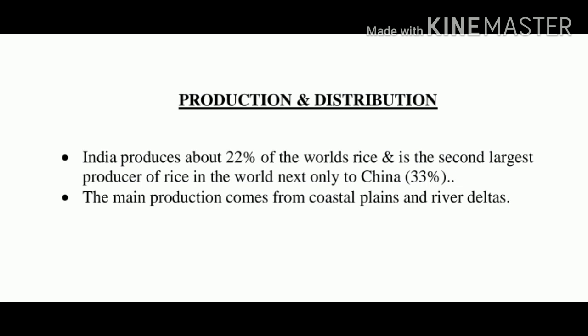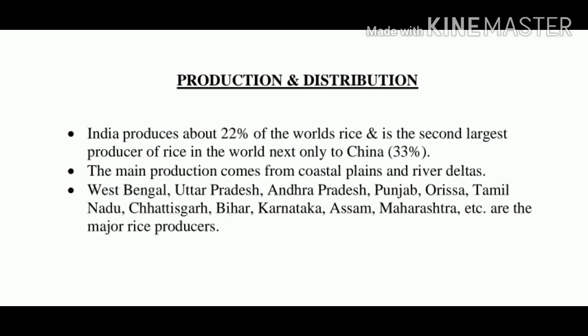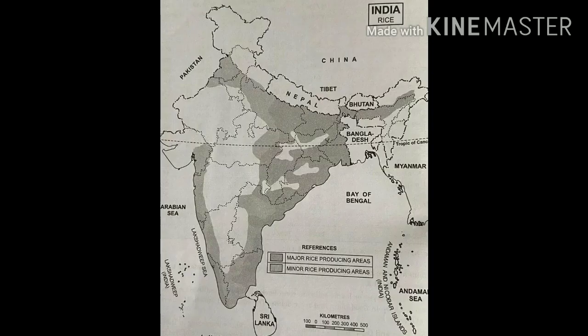West Bengal, Uttar Pradesh, Andhra Pradesh, Punjab, Orissa, Tamil Nadu, Chhattisgarh, Bihar, Karnataka, Assam, Maharashtra, etc. are the major rice producers.